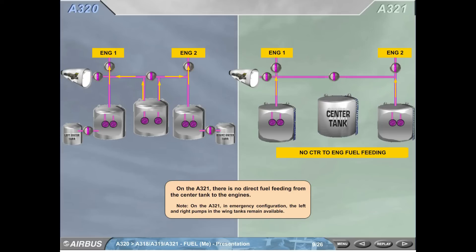On the A321, there is no direct fuel feeding from the center tank to the engines. Note: On the A321, in emergency configuration, the left and right pumps in the wing tanks remain available.